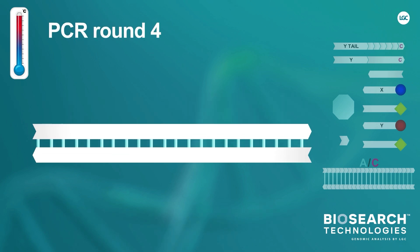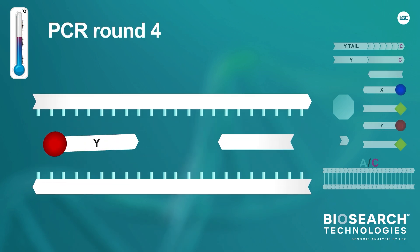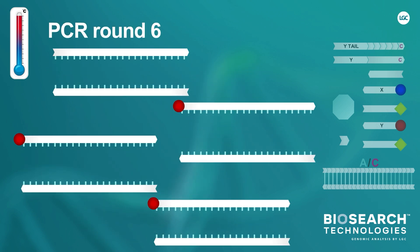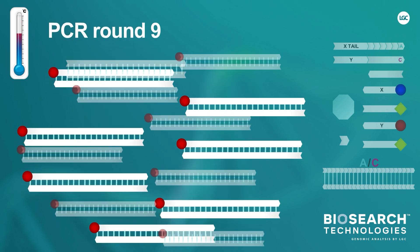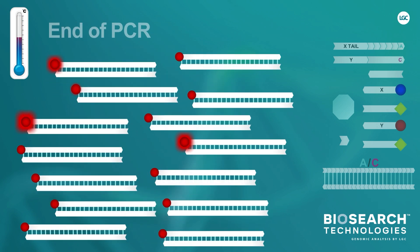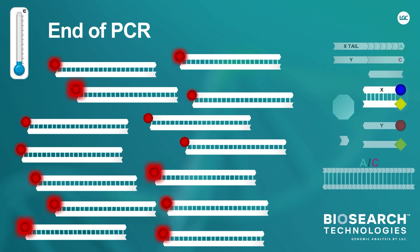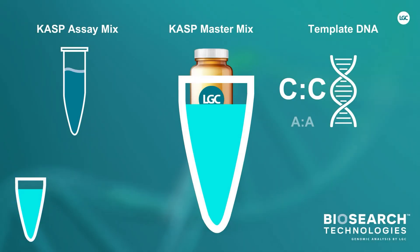The presence of allele C in the original DNA template has resulted in the HEX-labeled oligos being incorporated into the PCR product. This fluorophore is no longer quenched and will therefore emit fluorescence. The fluorescence from the completed reaction is now measured and this completes the CAASP genotyping reaction for this DNA sample.